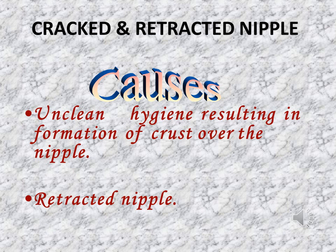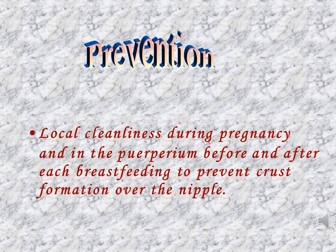Cracked and retracted nipple — causes: Unclean hygiene resulting in the formation of crust over the nipple. If the mother does not clean the breast or nipple after each feed, there are chances of a cracked nipple. A retracted nipple, if not treated, may convert into a cracked nipple. Prevention: Local cleanliness during pregnancy and the puerperium before and after each breastfeeding prevents crust formation over the nipple. The mother should be encouraged for breast cleanliness during pregnancy, as it may prevent cracked and retracted nipple.